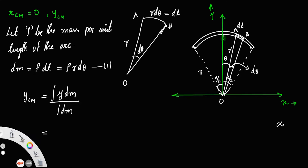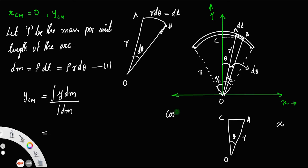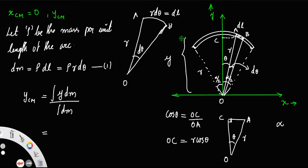Now let us take triangle OCA. This angle is θ and the length OA is R. Taking cos θ in this right triangle, we get cos θ equals OC divided by OA, so OC equals R cos θ. This OC is our y-coordinate, therefore y equals R cos θ.